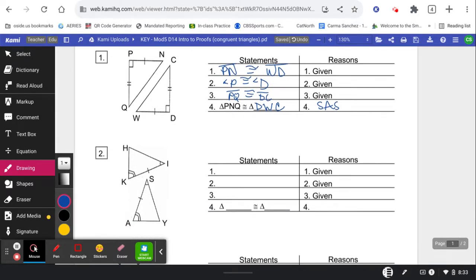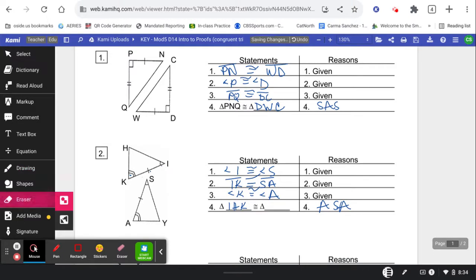Okay, next we've got an angle, we've got a side, we've got an angle. So this is going to be congruent by angle side angle, we can already see it coming. So let's start with angle I is congruent to angle S, side IK is congruent to side SA, and angle K is congruent back to angle A. So triangle IHK is congruent to triangle SYA.